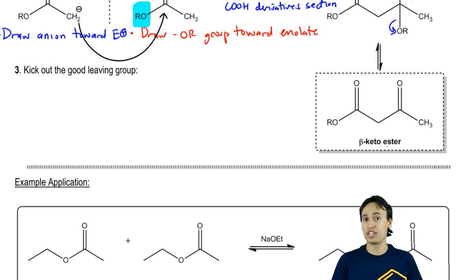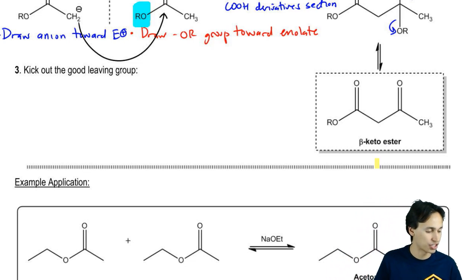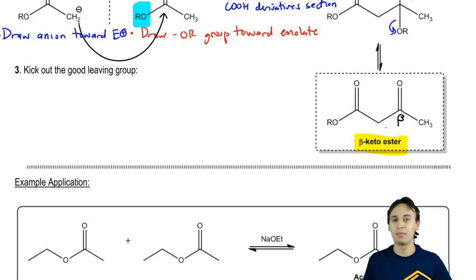What's great about beta-keto esters is that unlike other condensations that sometimes have alternate products, for example, there's a condensation called the aldol condensation where you have two different products that are possible. But Claisen is easier because Claisen, you only have one. You're always just going to have a beta-keto ester. That's it. Why do we call it beta-keto ester? Because you've got an ester with a ketone on the beta position.